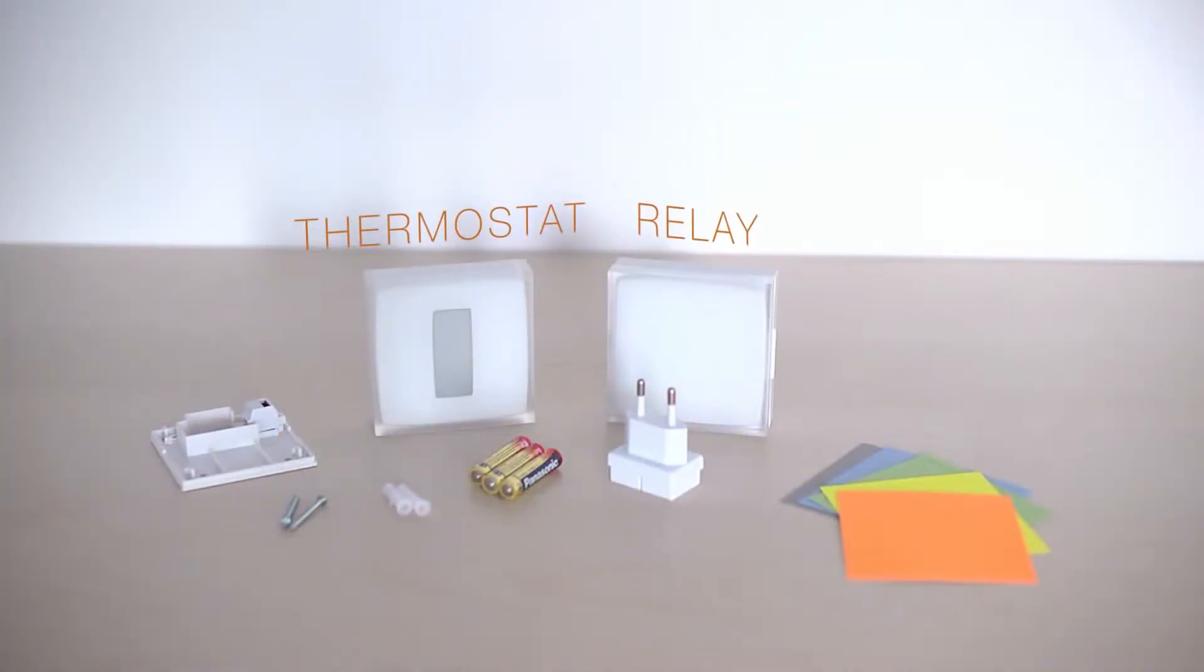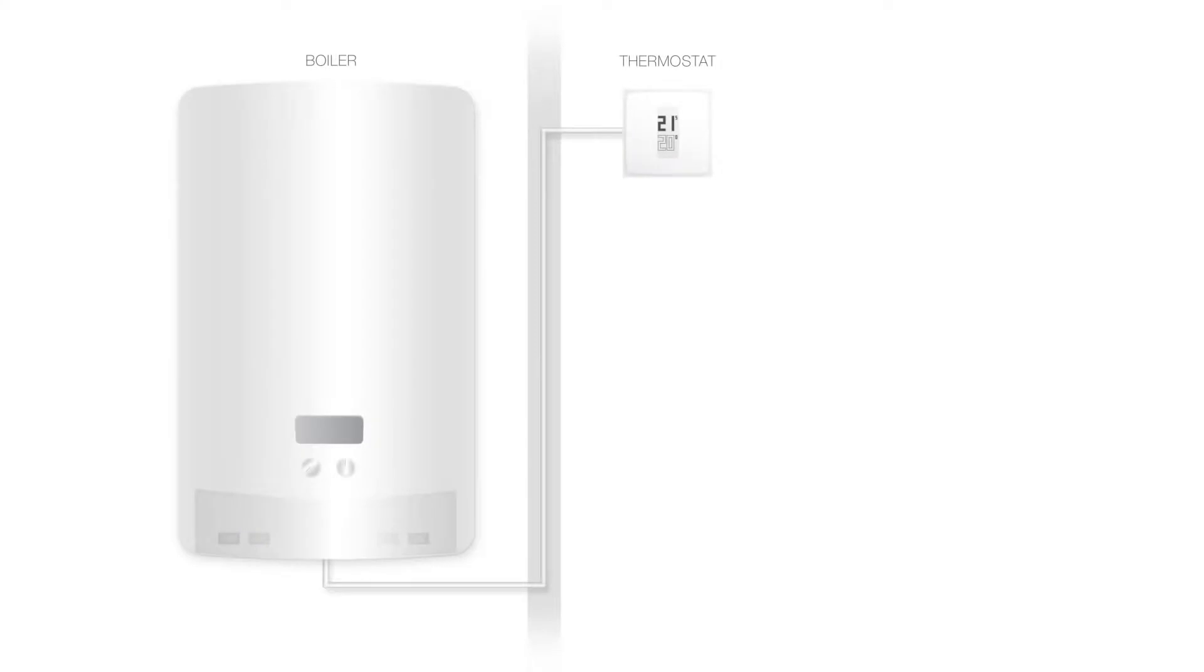In this installation, the Natatmo thermostat is wall-mounted and controls your boiler using existing wall wires. Via radio, the thermostat connects to the Natatmo relay. The Natatmo relay assures the Wi-Fi connection to the internet and the ability to remotely control your thermostat from your app.